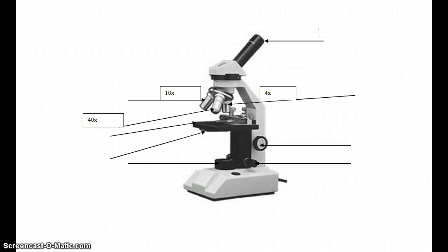So this top lens here, the very top, is called the eyepiece, but sometimes it's called the ocular lens, and this is where we look through to look at the specimen.